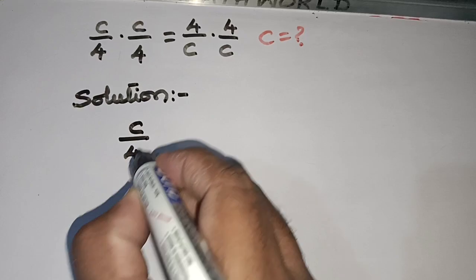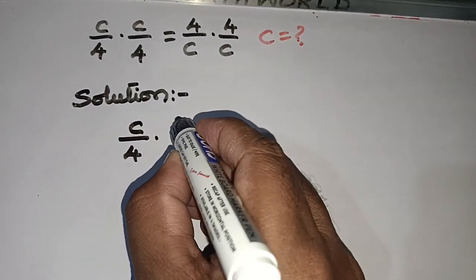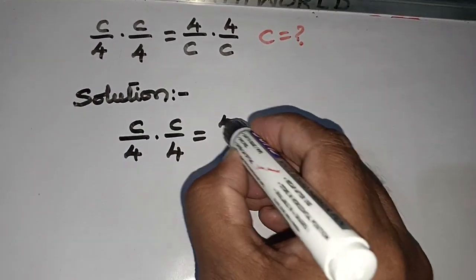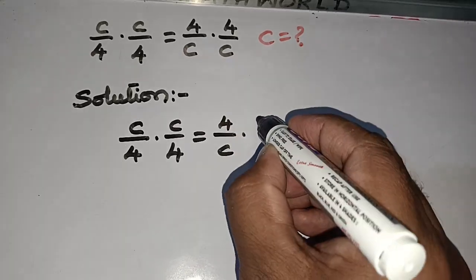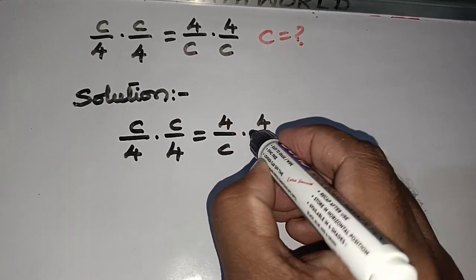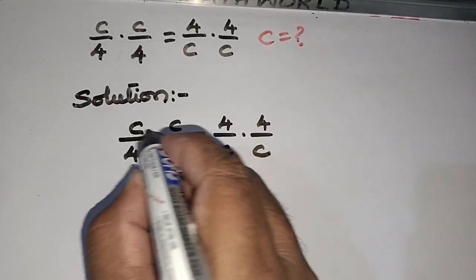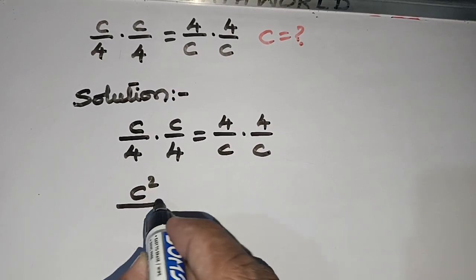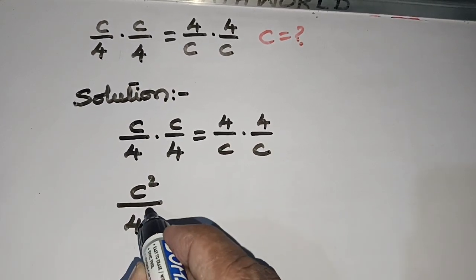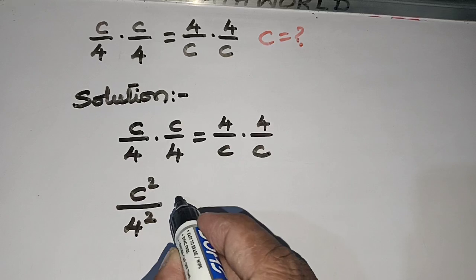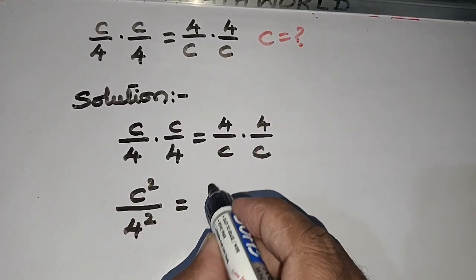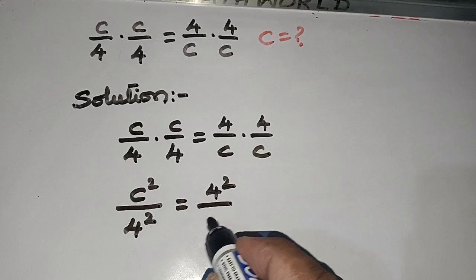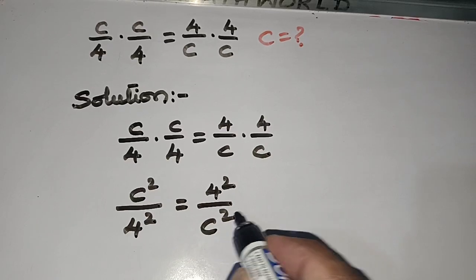You can rewrite it as c/4 times c/4 is equal to 4/c times 4/c. And this is c times c, which is c squared, divided by 4 times 4, which is 4 squared, is equal to 4 squared divided by c squared.